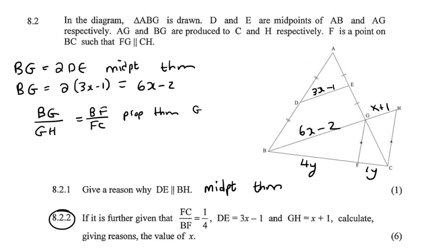Now we can just fill in 6X minus 2 over X plus 1 equals to 4Y over 1Y. Now notice that these Ys cancel, and so then we just end up with 6X minus 2 over X plus 1 equals to 4 over 1.